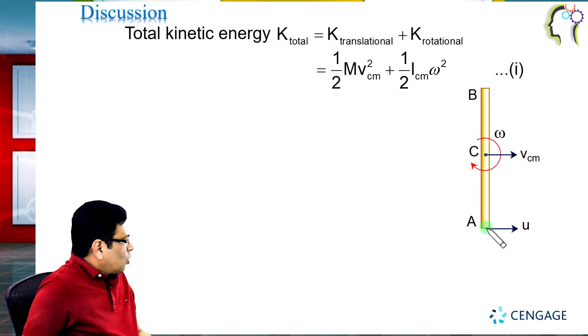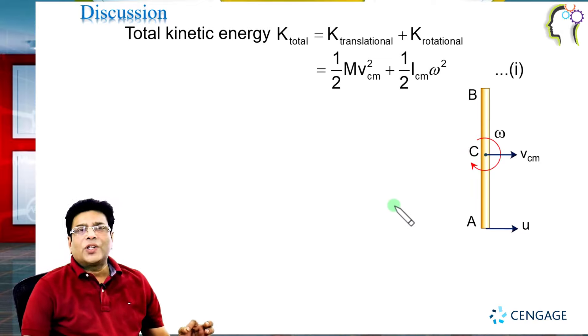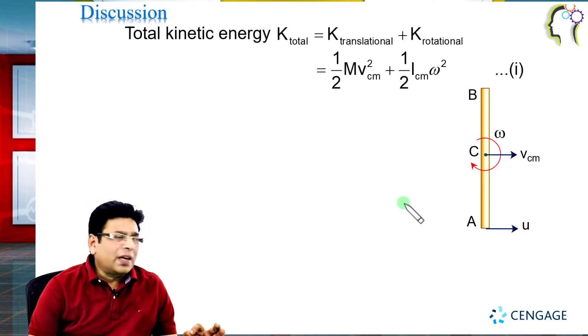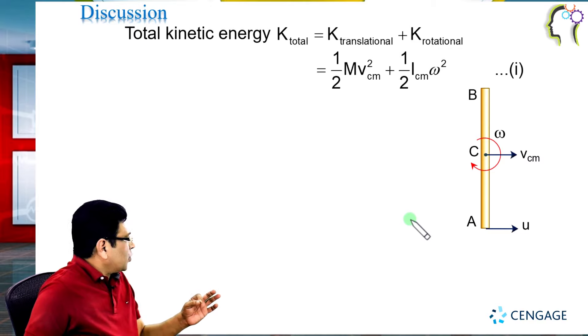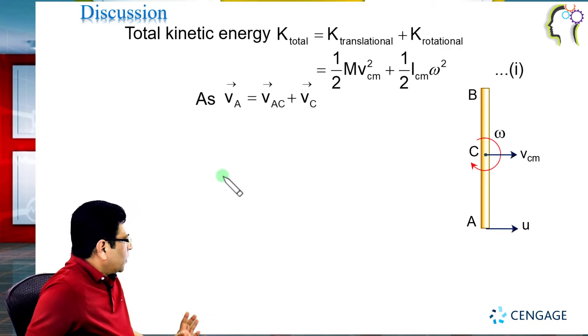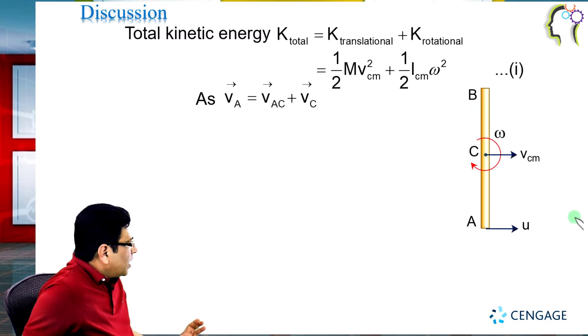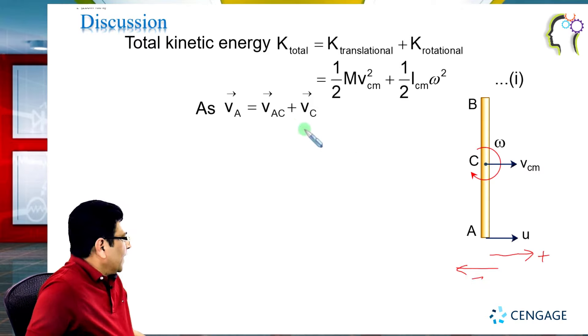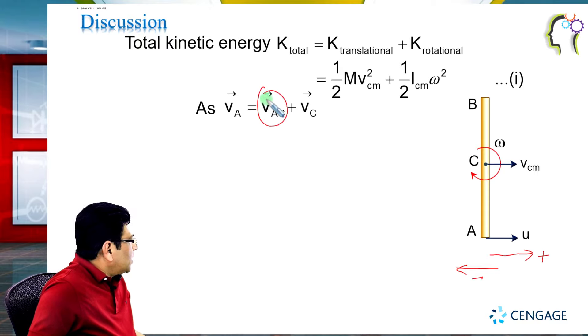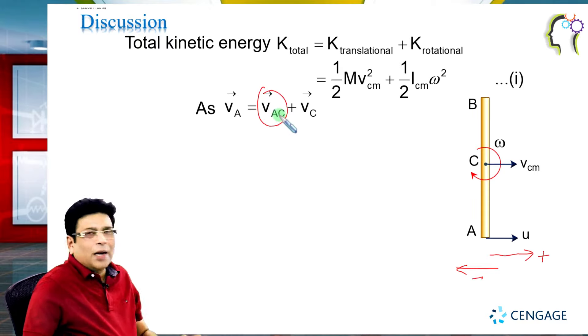We know the velocity of A, so we can write the vector equation relating velocity of A, velocity of the center of mass, and velocity of A with respect to C. Let us write this vector equation. We can write the direction here. This direction is positive, so we can write the opposite direction. This is the velocity of A with respect to C.